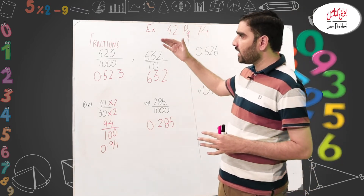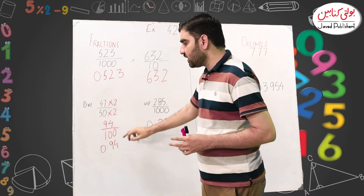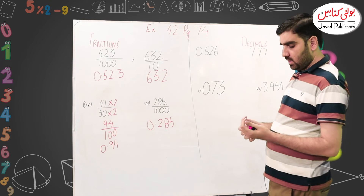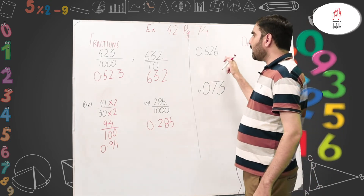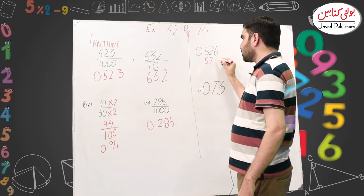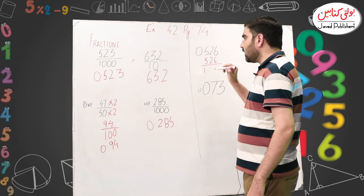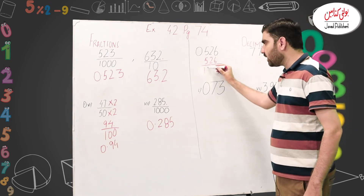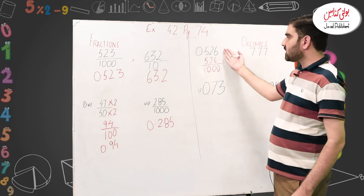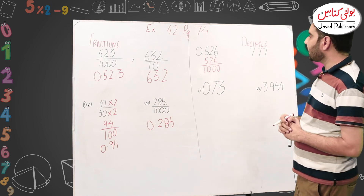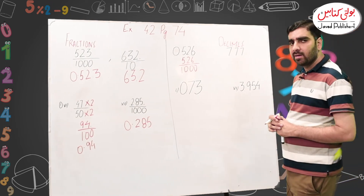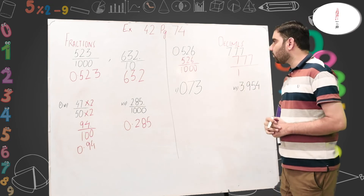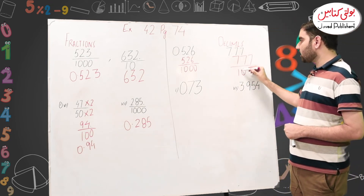Now we move to Part 2, where we have been given decimals and we will convert them into fractions. It is also very easy. What we do is: write the value given after the decimal point as the numerator. Then, count how many digits are after the decimal point — that many zeros go in the denominator. For example, 0.526 has three digits after the decimal, so the denominator is 1000. For 0.7777, there are two digits after the point, so we put two zeros in the denominator.